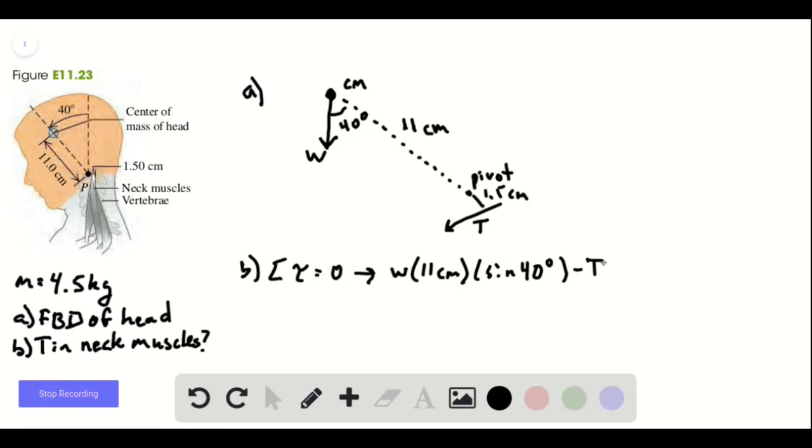Minus the tension times its moment arm to the pivot point. Minus the tension equals zero. So because the tension also produces a torque.